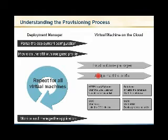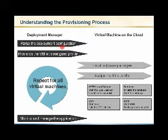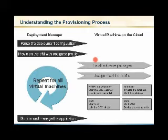When a machine is provisioned and started on the cloud, there are a few steps going on behind the scenes. You don't necessarily need to be familiar with all of this, but for whoever is curious to understand what's going on: the first step is to pass the deployment descriptor, a simple XML file which we'll show you later on. A provision manager — or what we call deployment manager — actually starts a new virtual machine on the cloud.